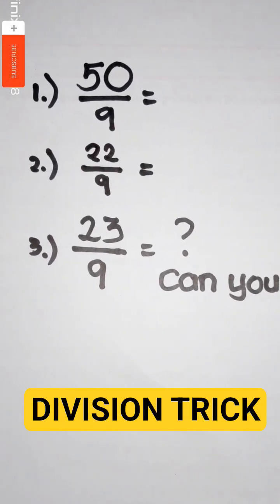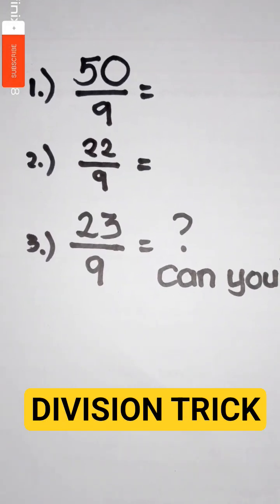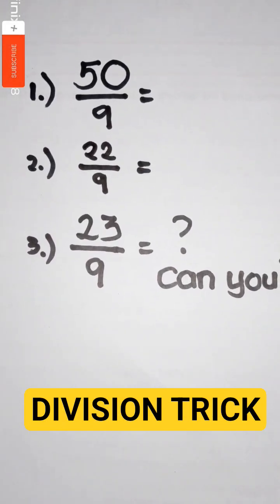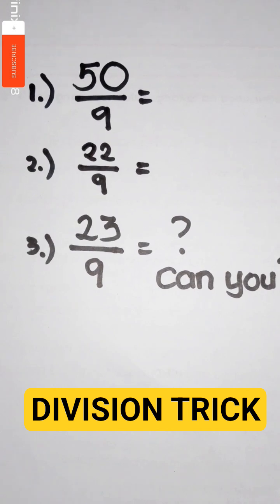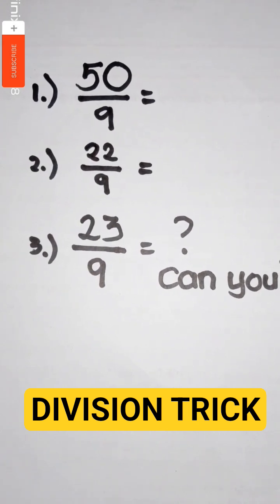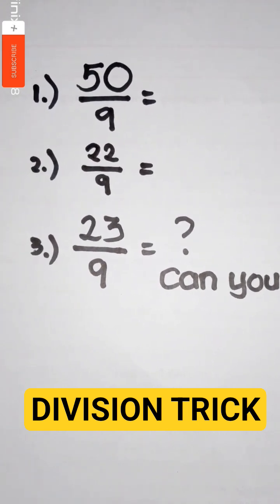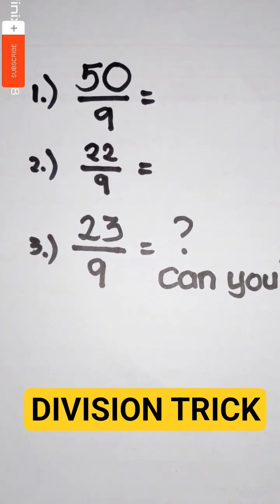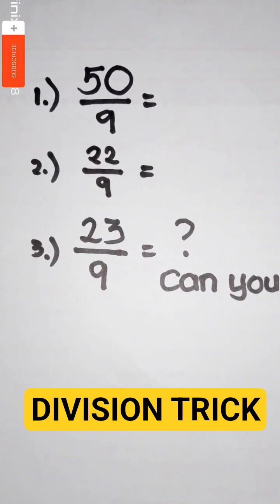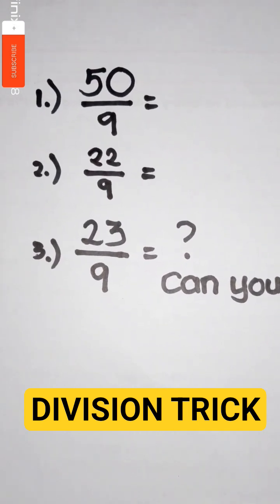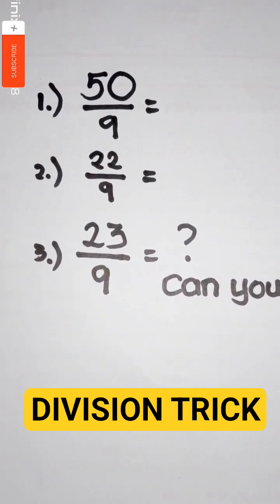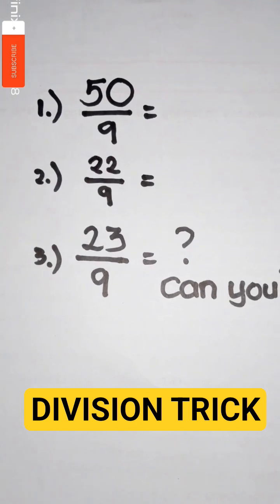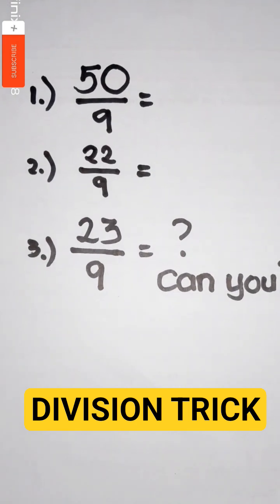All right, so let's see how we can divide these numbers by 9. We have 50 over 9, 22 over 9, and 23 over 9. I'll leave number 3 for you guys.